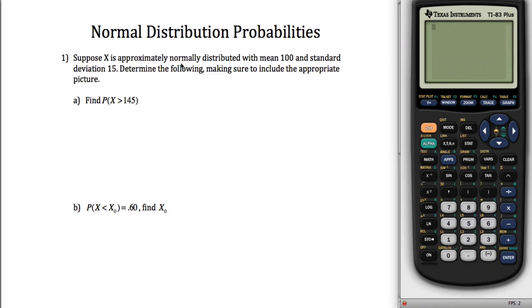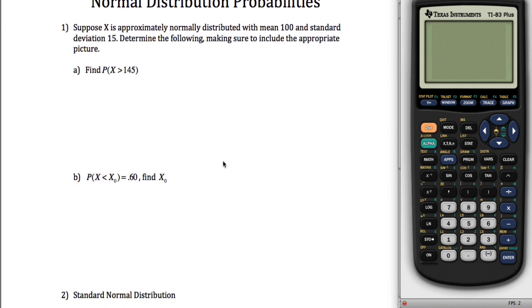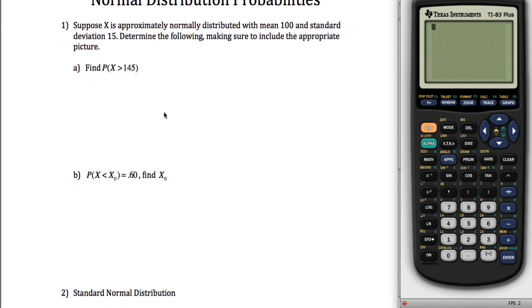This is a quick tutorial on normal distribution probabilities. This first problem tells us that X is approximately normally distributed with a mean of 100 and a standard deviation of 15. It asks us to determine the following, making sure to include the appropriate picture.